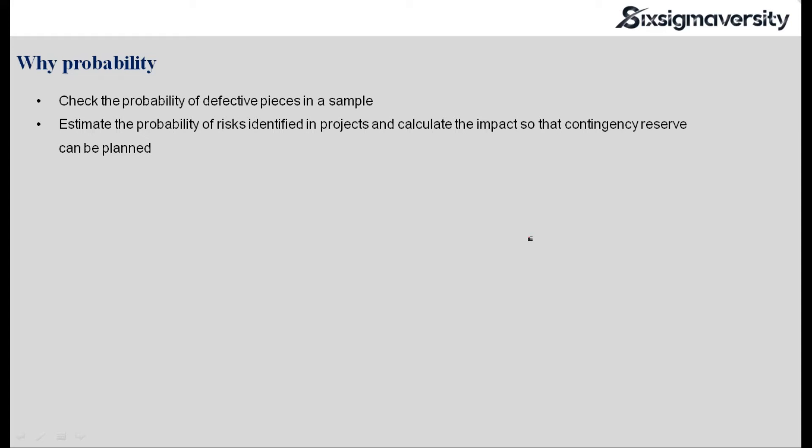Another example could be when project managers identify a list of risks that might impact their project schedule or project cost. They would look at each of those risks and assess the probability of each of those risks occurring, and when that risk occurs, what is the total cost they will have to incur if it is a negative risk or a threat that might happen to the project. So that is another practical use of probability.